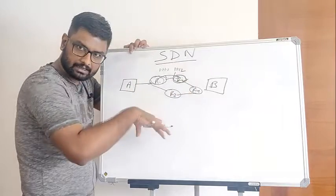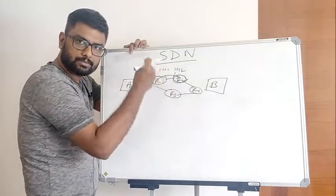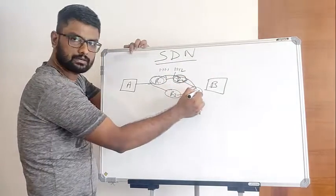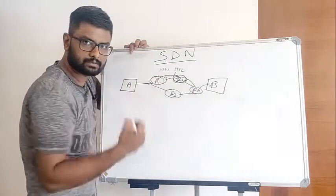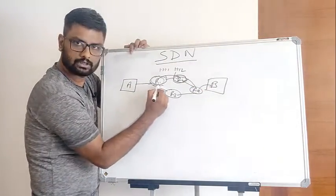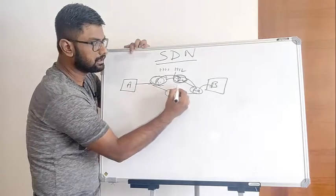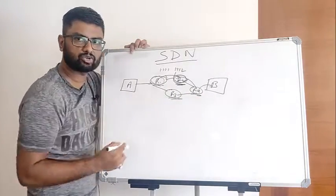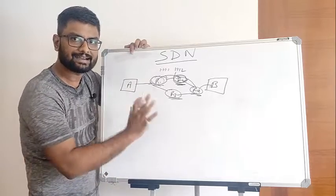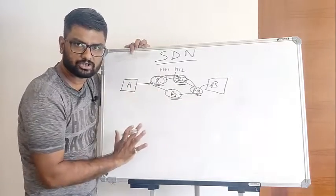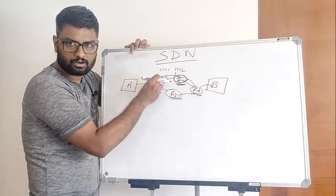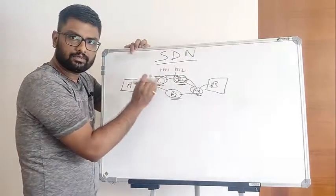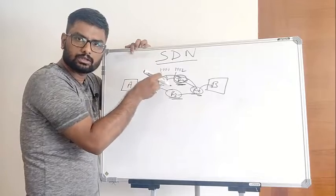Each router has its own brain. From its brain it checks what is the best route and forwards to the next router accordingly. Each router uses its own brain to process the information independently. This is what happens in a distributed network — each router has a predefined route configuration and follows it without depending on any other system.